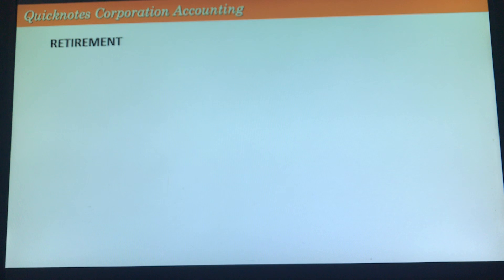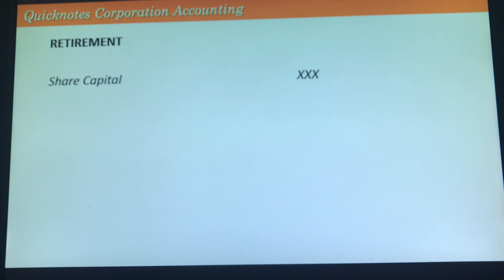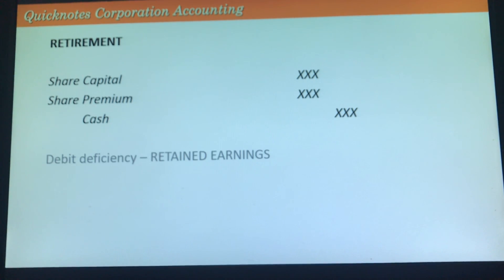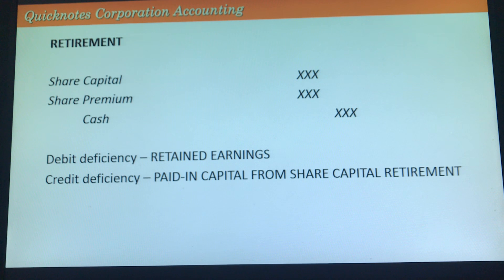For share capital retirement, we say goodbye to the shares. Since share capital has a credit balance, we debit it to bring it to zero. Debit share capital at par and debit the share premium attributable to those shares — prorated based on the number of shares retired versus total issued and outstanding — then credit cash for the retirement price. If there is a debit deficiency, debit retained earnings; if there is a credit deficiency, credit a new paid-in capital account called paid-in capital from share capital retirement.